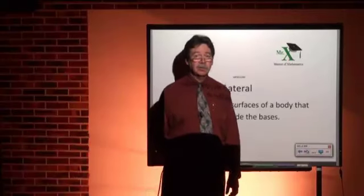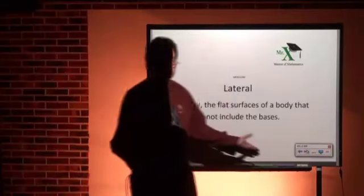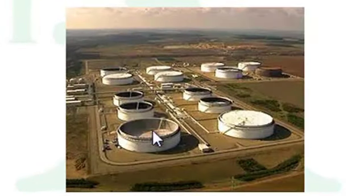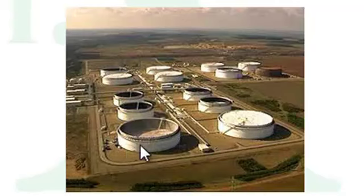Hi, Mr. X with the glossary term lateral. It's the flat surfaces of some solid or geometric shape that we can generally see. So let's consider a cylinder. These would be big oil tanks here — they'd be cylinders. So clearly the walls are considered lateral surfaces.